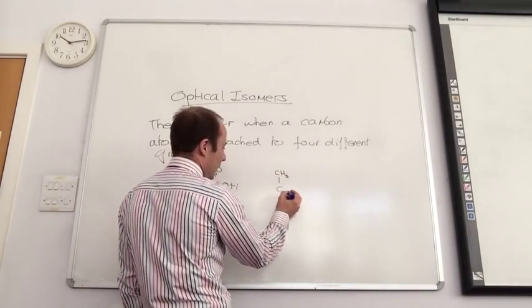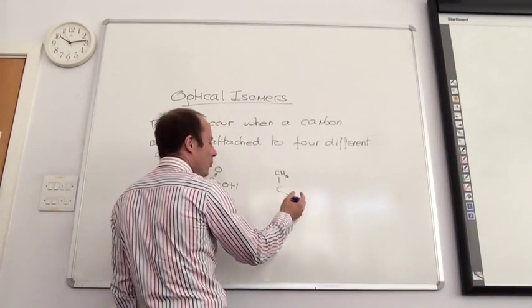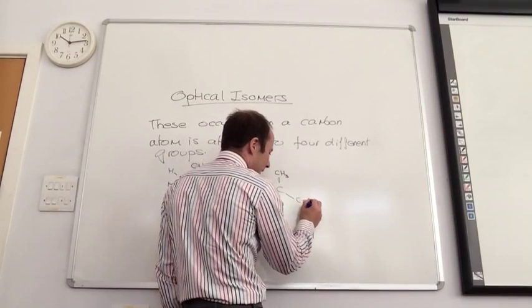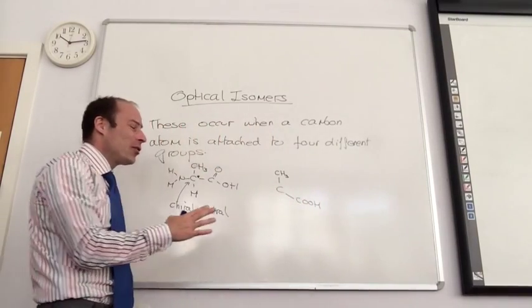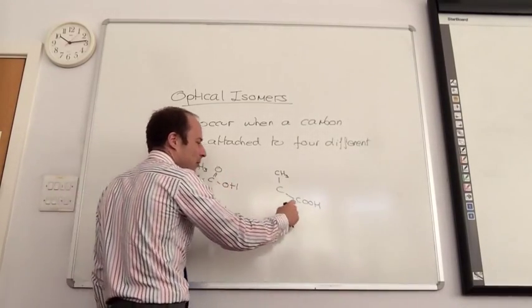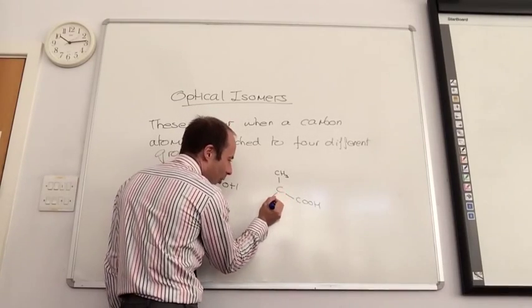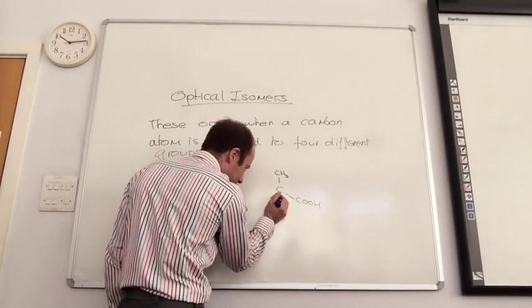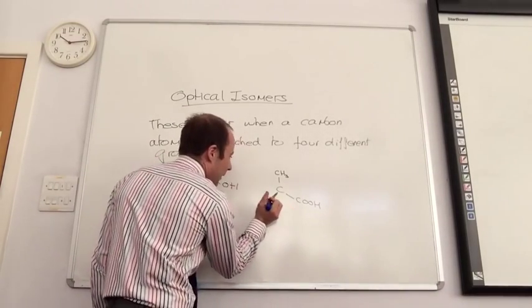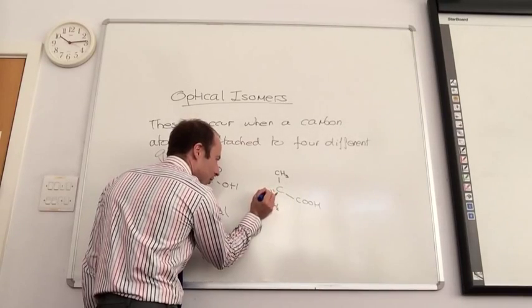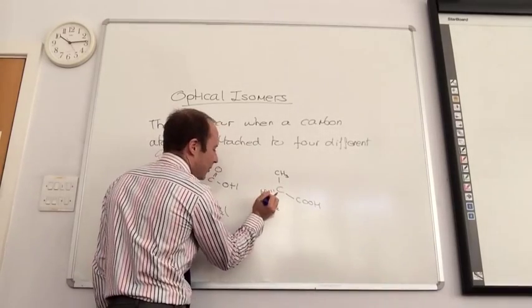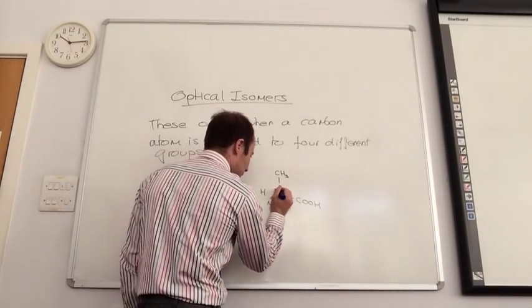You put one group up there. It doesn't matter which order you do it initially. So I will put the carboxylic acid group there. Try and keep it as simple as possible. So don't do the C double bond OH. Just put COOH. The wedge coming out here, let's do that as being the NH2 group. And then the one going back, we will put a hydrogen. Does it always have to be in a particular order? No.